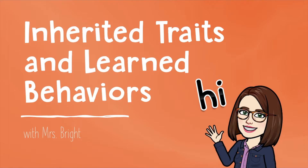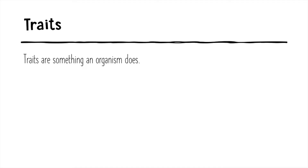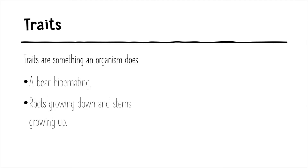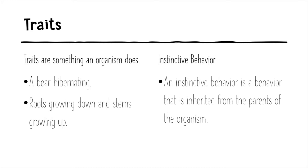Here we go. First off, inherited traits. Traits are sometimes something an organism does, like a bear hibernating or roots growing down and stems growing up. We call these instinctive behaviors. An instinctive behavior is a behavior that is inherited from the parents of the organism — the animal or plant is born with that behavior.